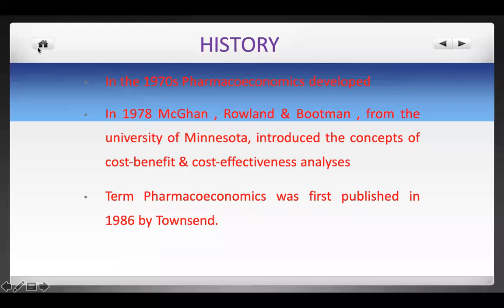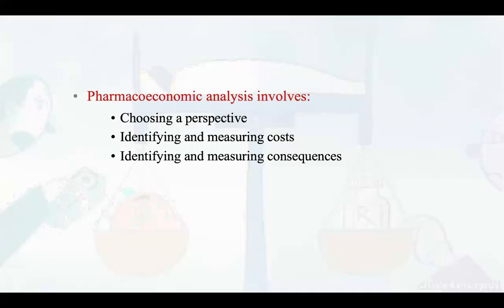In history, pharmacoeconomics developed in the 1970s. McGhan and Roland from the University of Minnesota introduced the concept of cost-benefit and cost-effectiveness analysis. The term 'pharmacoeconomics' was first published in 1986 by Townsend. Pharmacoeconomics relates to pharmaceuticals, treatment, and drugs that someone has to purchase.